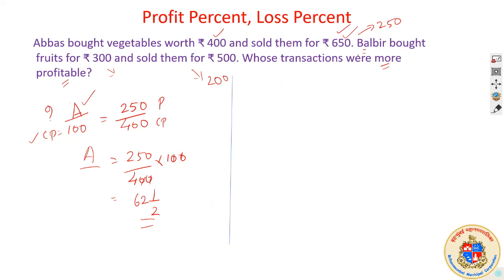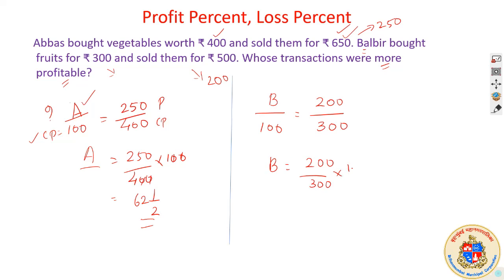Now let us come to Balbir. Balbir got Rs. 200 profit out of Rs. 300 invested. Let B be the profit for Balbir per Rs. 100. What actually happened is he got a profit of 200 against a cost price of 300. Applying the same principle: B is equal to 200 upon 300 into 100. Dividing both sides with 100, we get 200 upon 3, which equals 66 and 2/3. So Balbir gets 66 and 2/3 rupees profit if he invests Rs. 100.